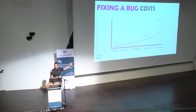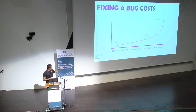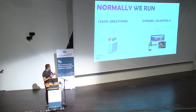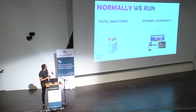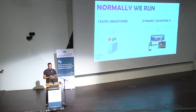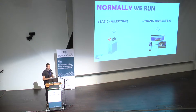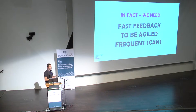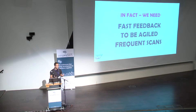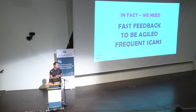How many of you are familiar with this slide? It shows exactly how costly the bug fix is when you fix it on the development phase. Normally we run static scans on our code on milestone release, and dynamic we do it once in a while because it's quite an expensive step. In fact, we need to have fast feedback on the security scans. We have to be agile, aligned with lean processes, and we have to have frequent scans in our code.